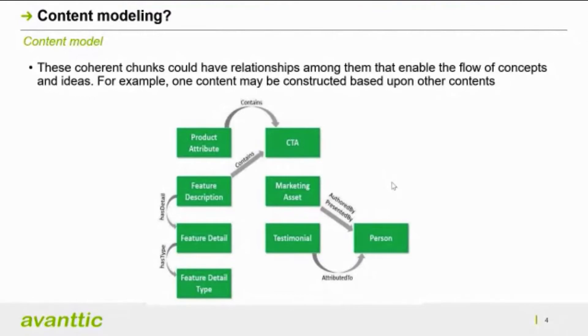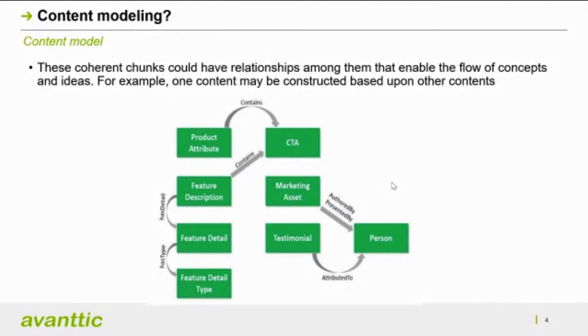A content model contains detailed definitions of each content type. You can mix or group content types and create a new content type that includes existing ones — you always reuse and link them. Think of your content model like a database: it will be used widely by any other application or system.